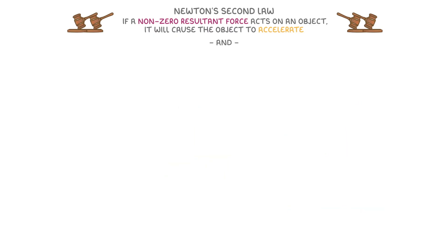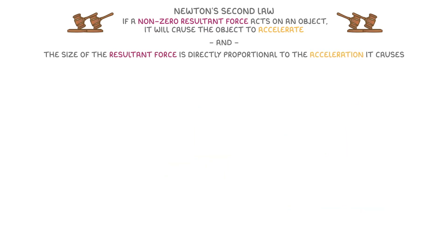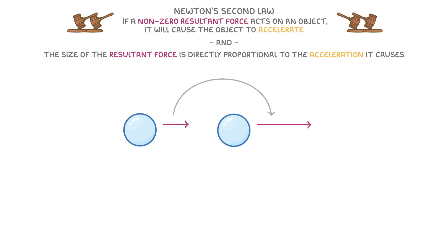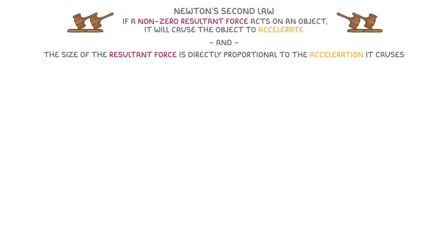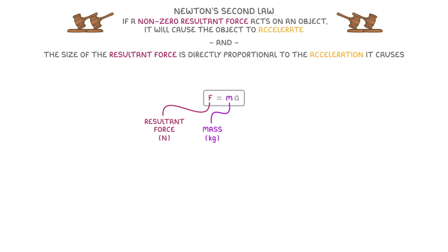The other part of Newton's second law is that the size of the resultant force is directly proportional to the acceleration that it causes. For example, if you made the resultant force twice as big, then the acceleration that it causes would also be twice as big. We can see this in the equation F equals MA, which says that the resultant force is equal to the mass of the object multiplied by the acceleration that it causes.